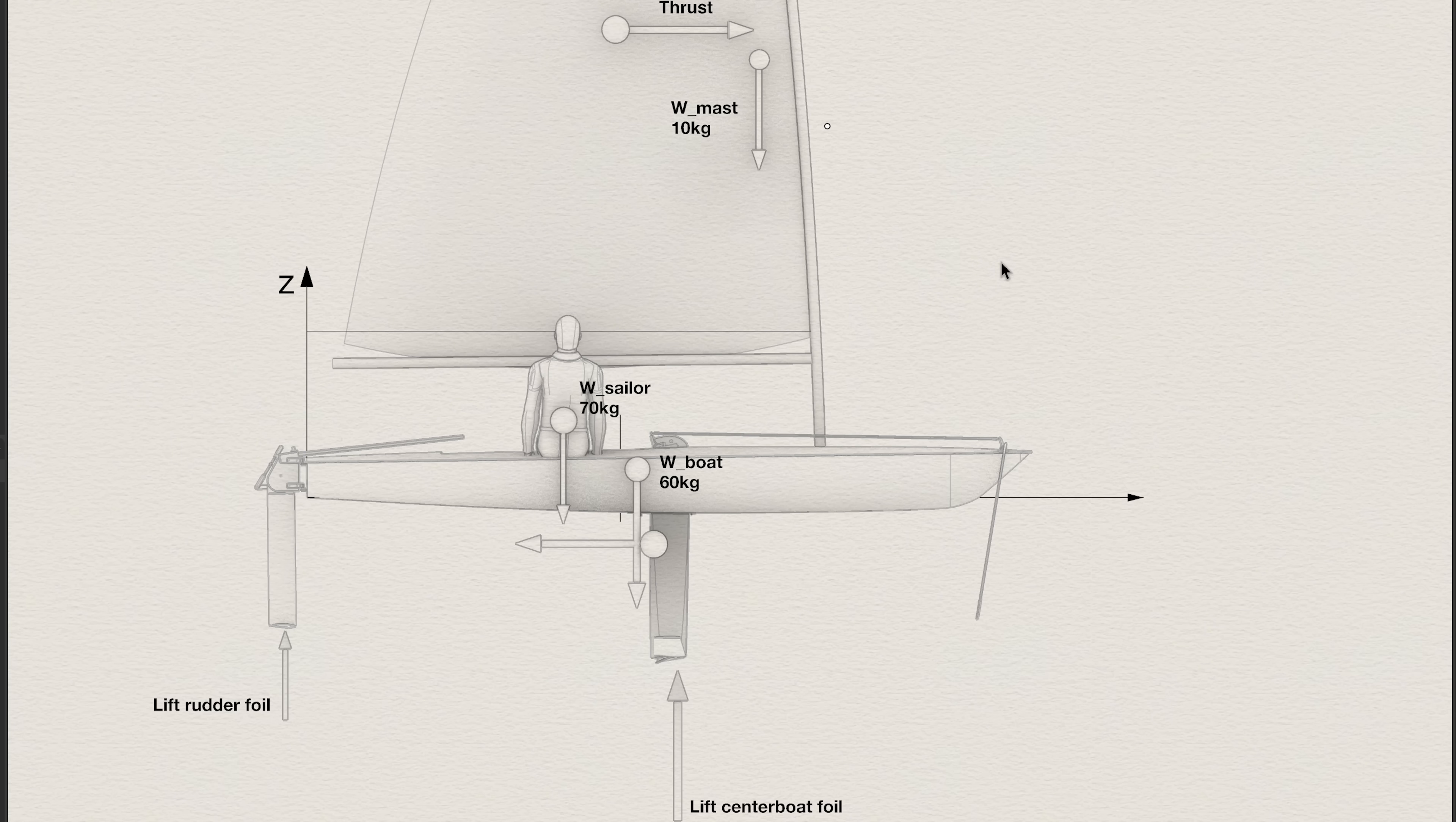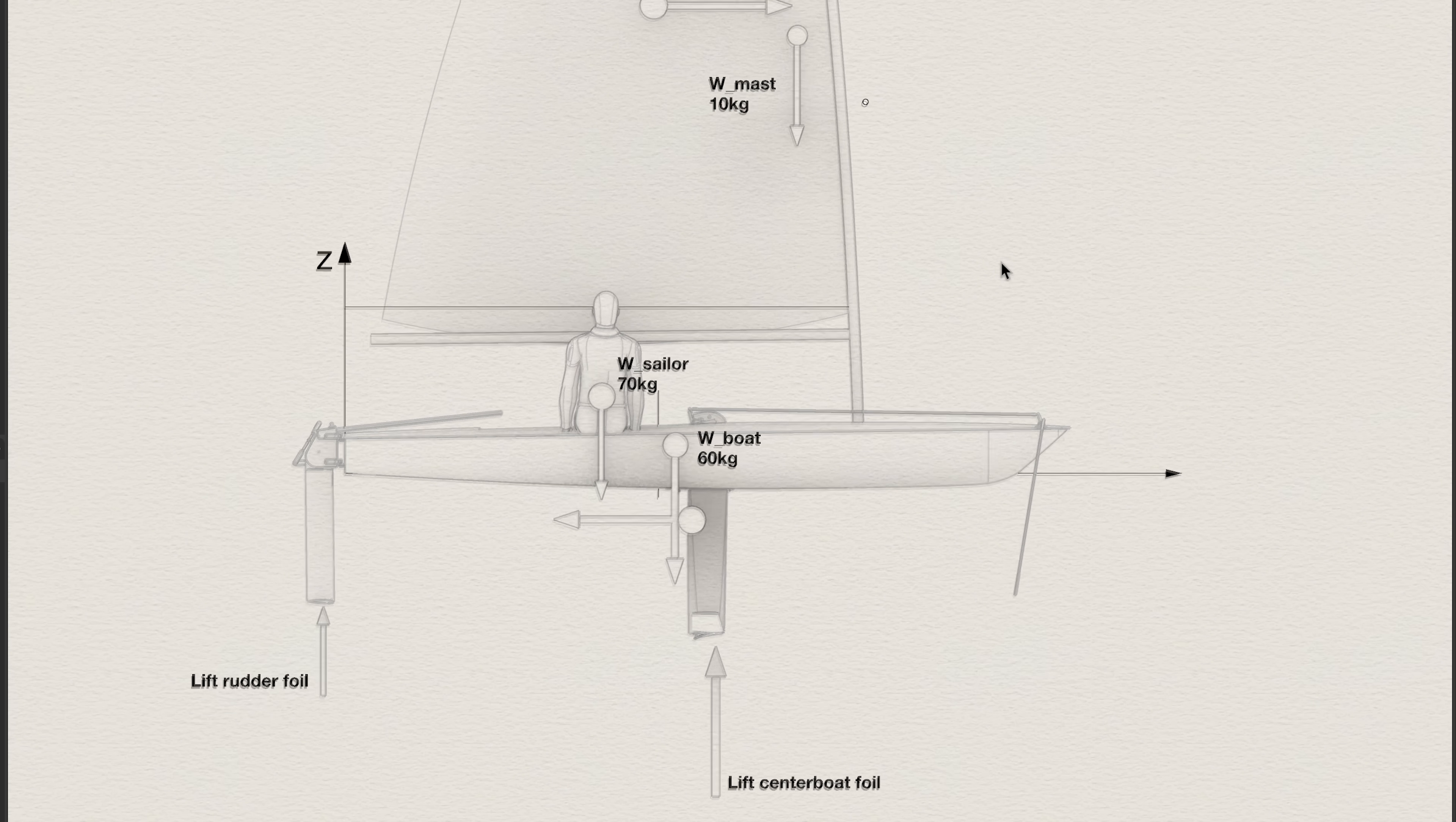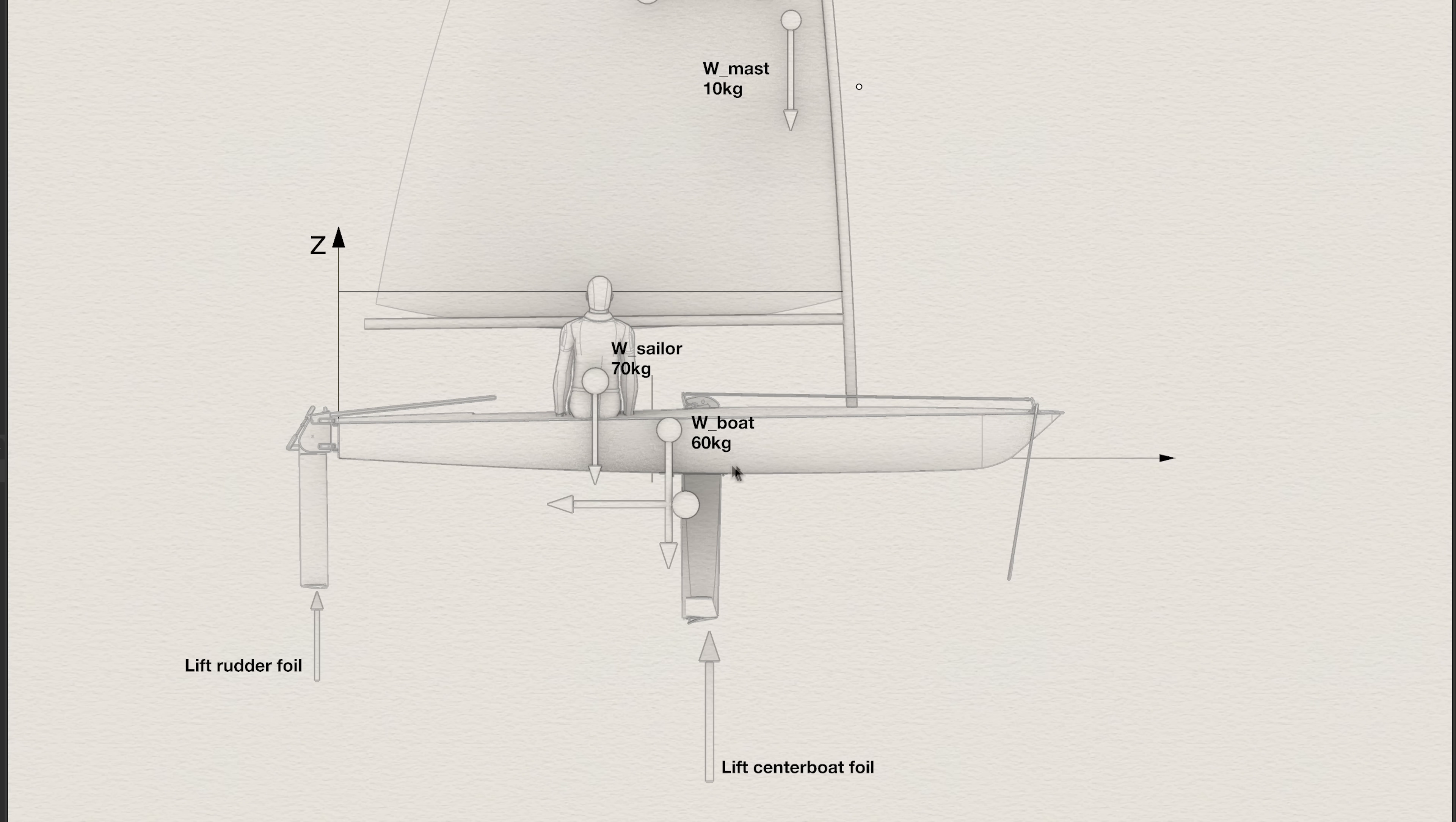And so how can I design this wing? I don't want to bore you, but we need to consider the equilibrium. We can start from the longitudinal equilibrium. So considering the weight of the boat, the weight of the mast, the weight of the sailor, they can change. In this way, we can find the lift of the centerboard and the lift of the rudder and they may also change.